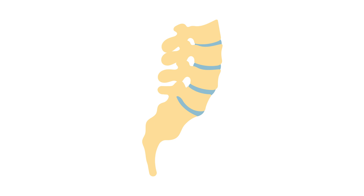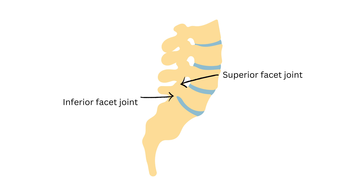In order to understand these pathologies, we first need to understand the structures involved. Here we have a lumbar spine diagram. In between our vertebrae, we have facet joints that help connect them together. We have a superior facet joint and an inferior facet joint between the vertebral bodies and spinous processes of each level. There is also a bridging connection between the facet joints known as the pars interarticularis.